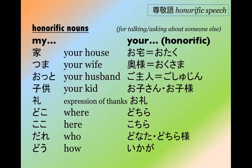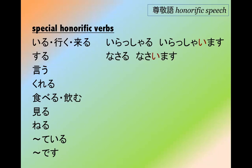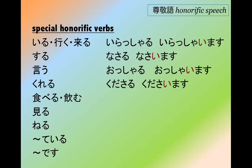More importantly, there are honorific verbs. There are special verbs: iru, iku, and kuru all share the same honorific form — irasharu, or irashaimasu. Note it is irashaimasu, not irasshaimasu. For honorific verbs ending in ru, the ru in the masu form often becomes i. Suru is nasaru, or nasaimasu. Yuu is ossharu, or osshaimasu. Kureru is kudasaru, or kudasaimasu.